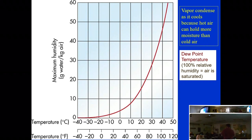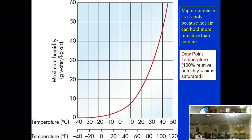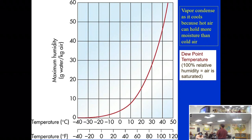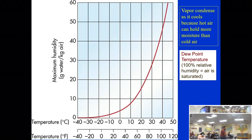This is called a sling psychrometer, and it's used to calculate humidity. You have two thermometers right next to each other — one has a small sock on it. You get that sock wet so you have a dry bulb and a wet bulb.